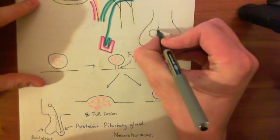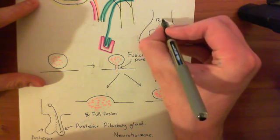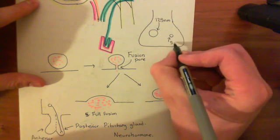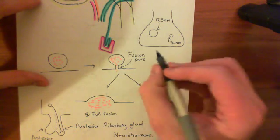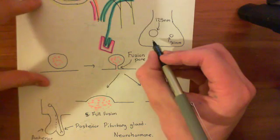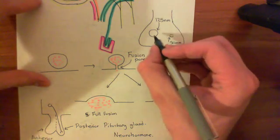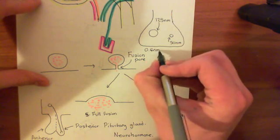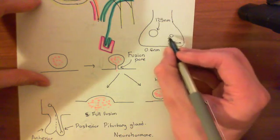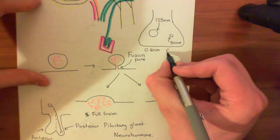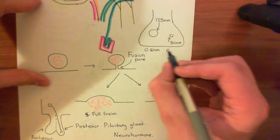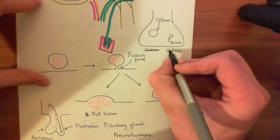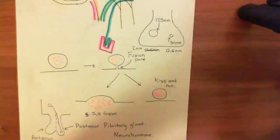The large synaptic vesicles are around 125 nanometers in diameter, whereas the small synaptic vesicles are generally around 50 nanometers in diameter. When they form fusion pores, the fusion pore of the large synaptic vesicle is generally around 2 nanometers in diameter, and for the small synaptic vesicles it's generally around 0.6 nanometers in diameter.